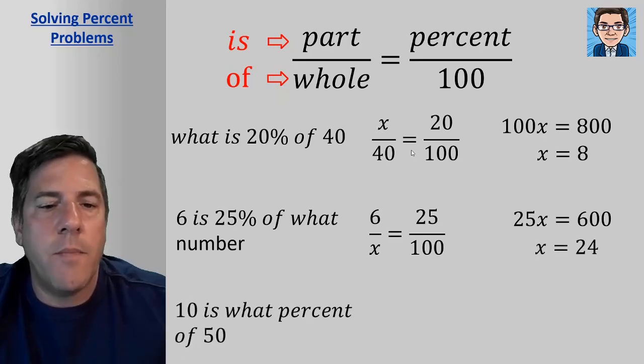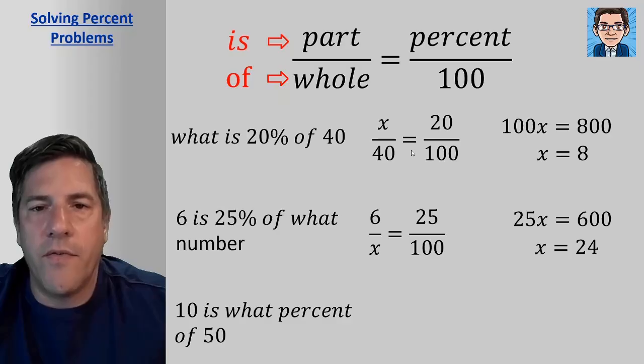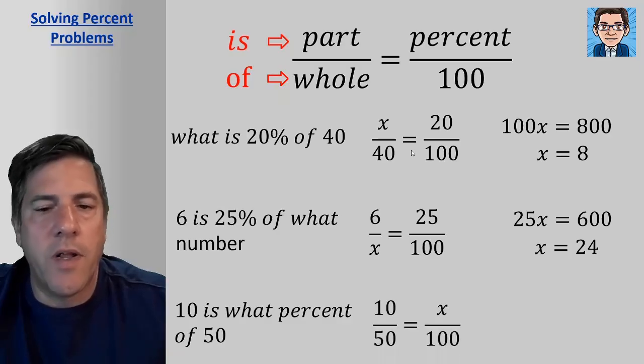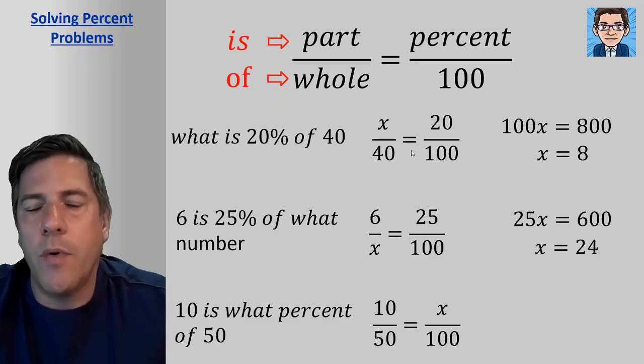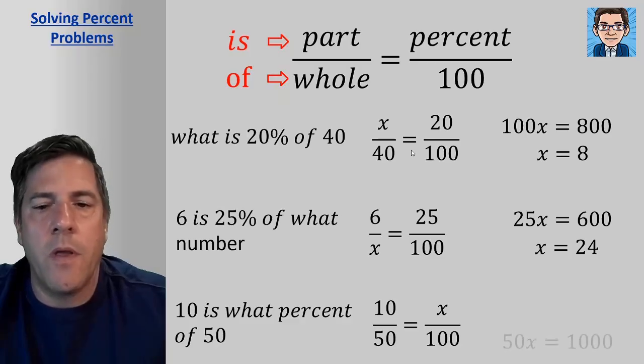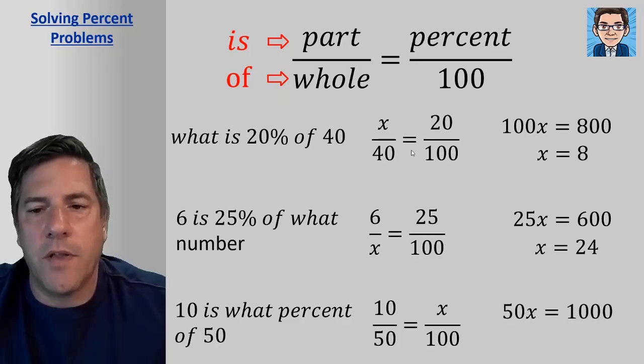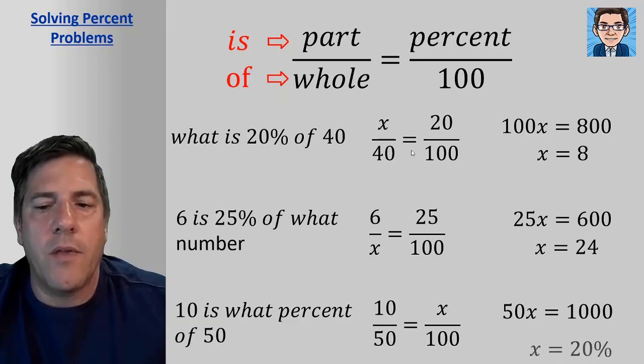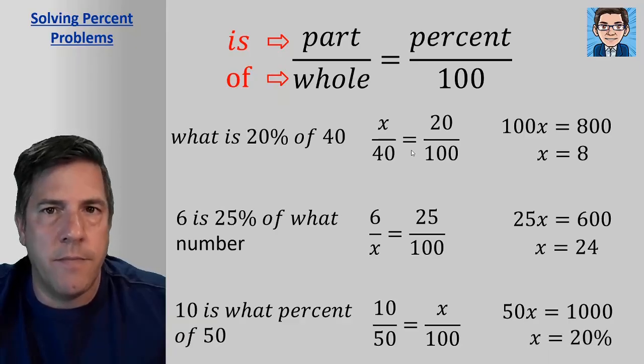And in the last problem, 10 is what percent of 50? So here we know the part and the whole. The part is 10. The whole is 50. What we don't know is the percent. So here we put the variable in for the percent. So x over 100. We cross multiply. And here we get 50x equals 1,000. Divide by 50, and you get the percent equals 20%.